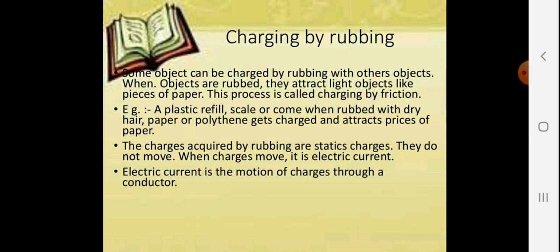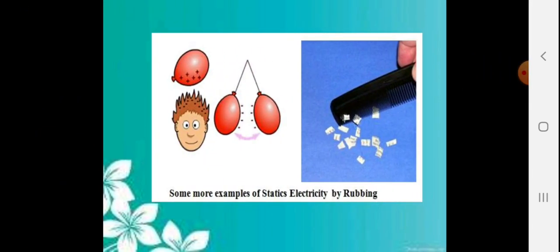A plastic refill or scale comb, when rubbed with dry hair, paper, or polythene, gets charged and attracts pieces of small paper. The charge acquired by rubbing is static charge. They do not move. When charge moves, it is called electrical current. Electric current is motion of charge through the conductor.